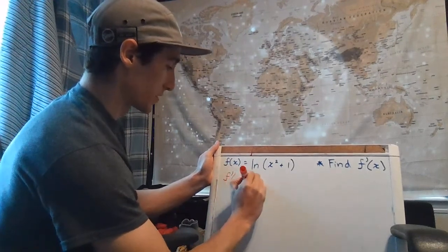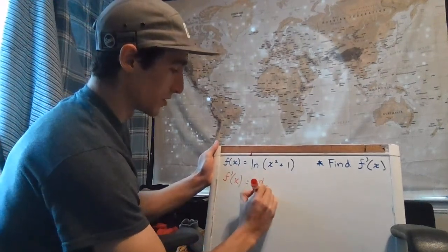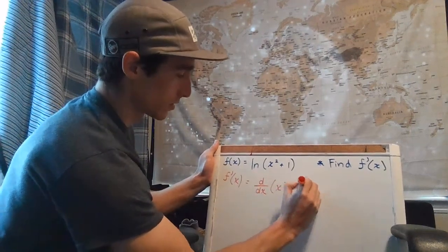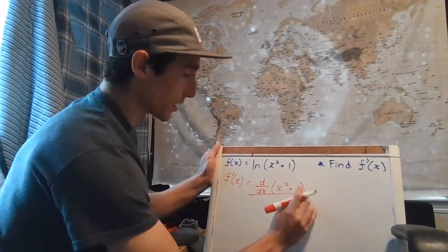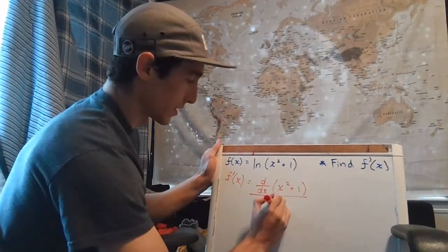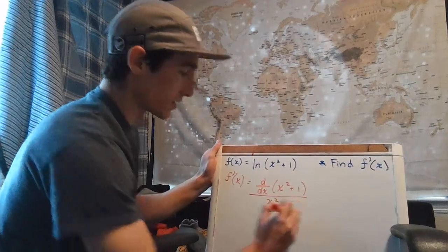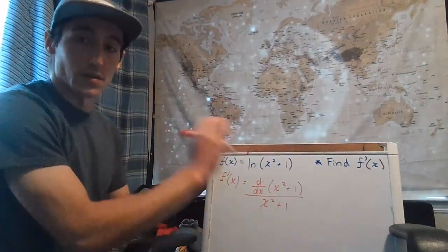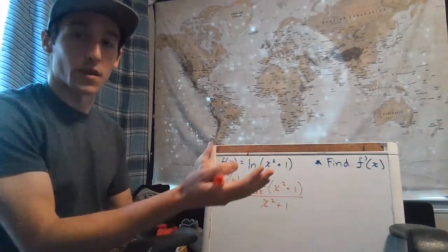So we have f prime of x is going to be the derivative of the inside function divided by the inside function. The inside function here is x squared plus 1. In the general example, we just called it u—it doesn't matter what it is.